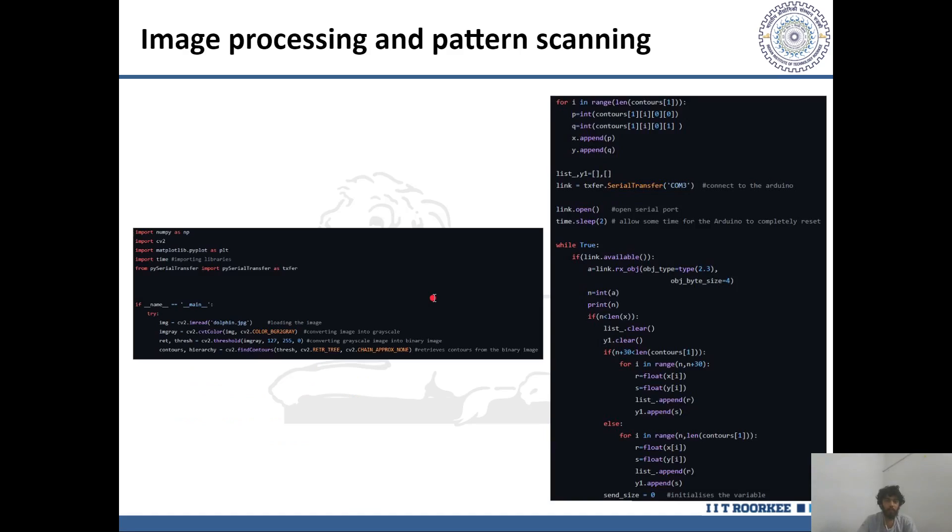Coming back to the original workflow, first the input image is processed using OpenCV. As you can see in this block of code, after converting the original image to binary grayscale image, contours are extracted. And after taking average of around 30 values, the pixels are indexed and added in the list. This becomes the target image coordinates list.